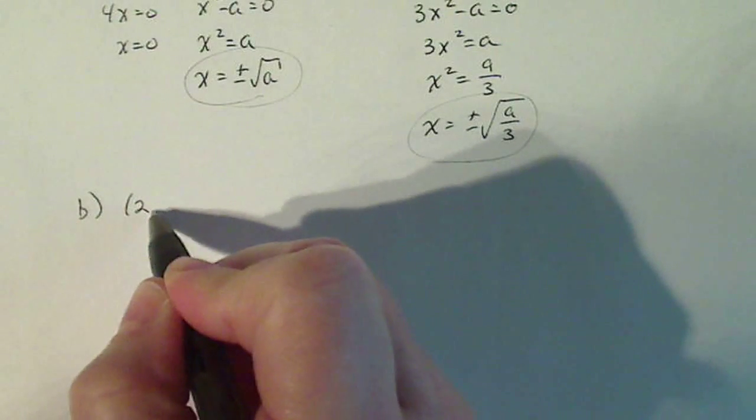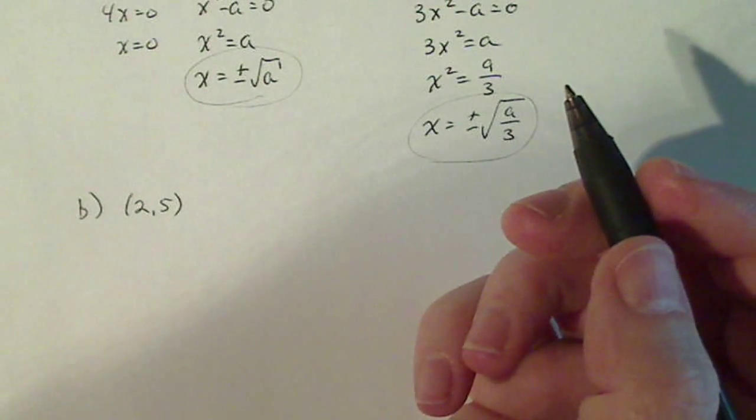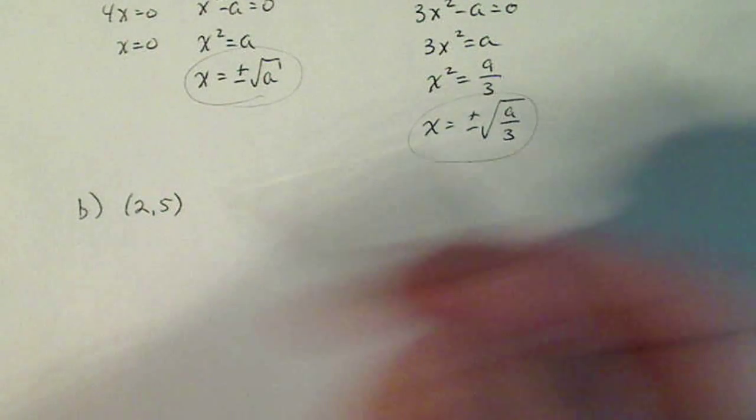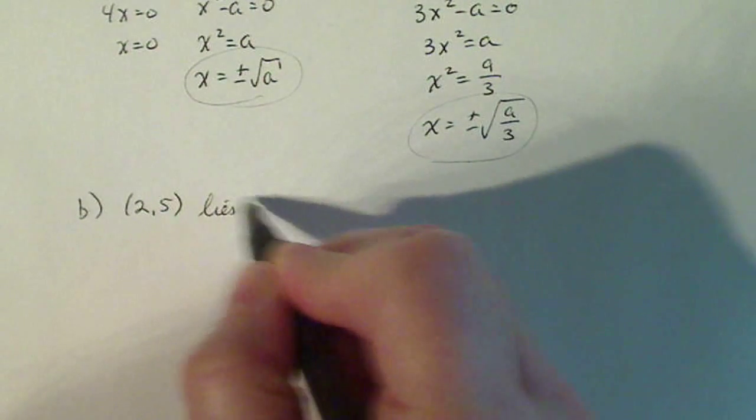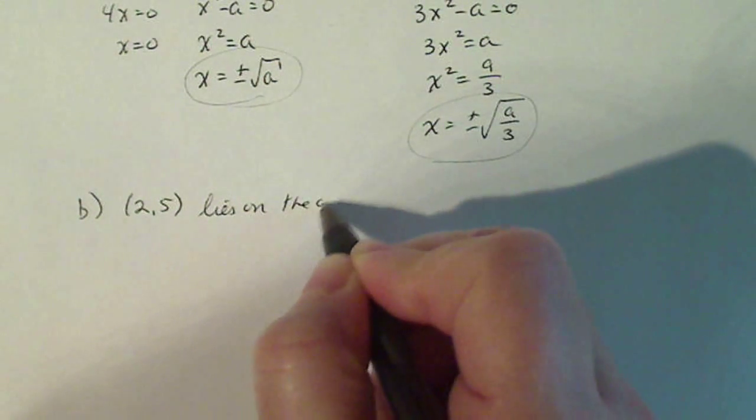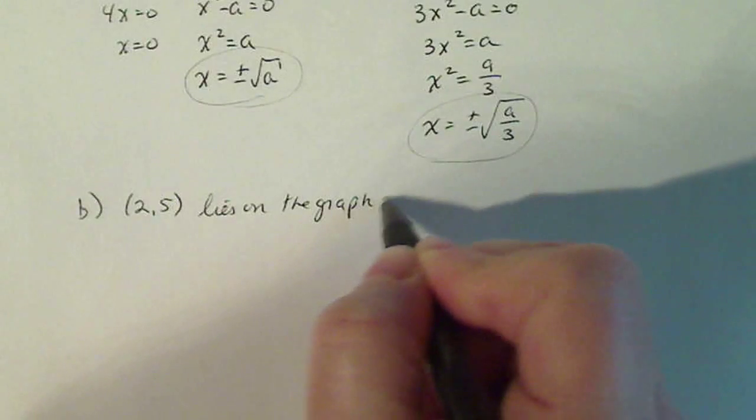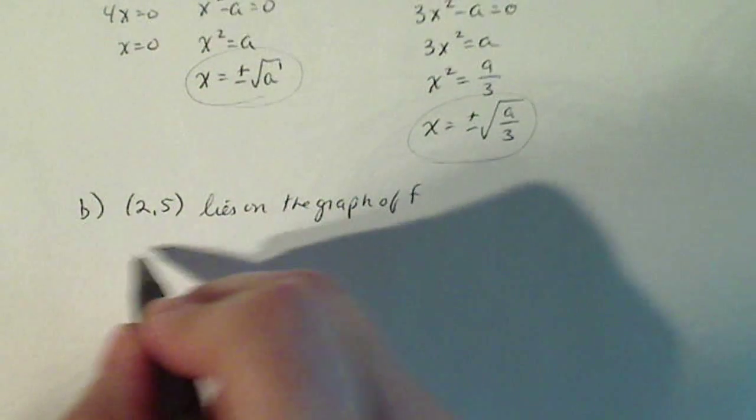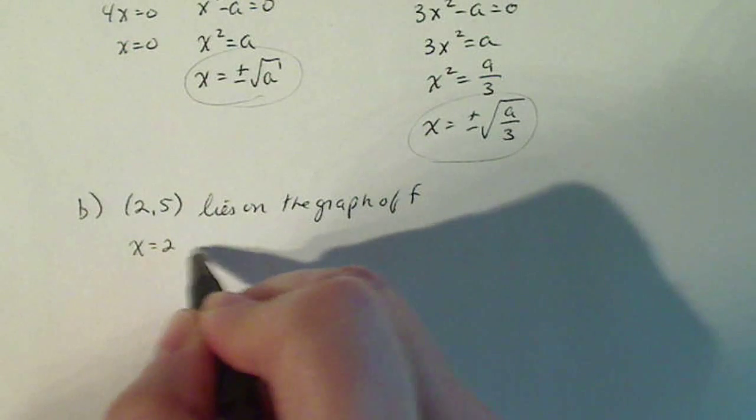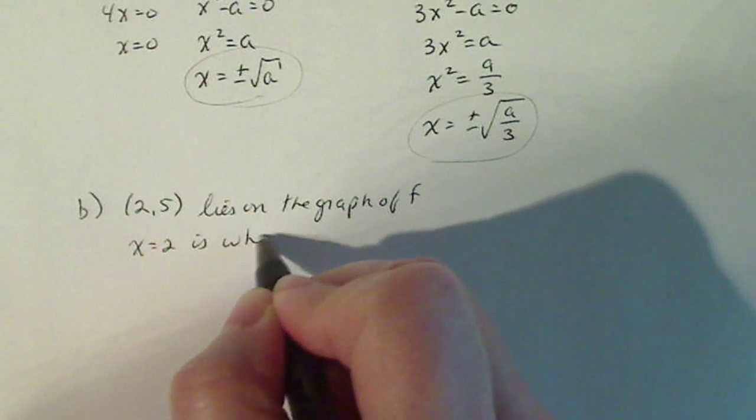So we know that (2, 5), if it's a critical point, we know it also lies on the graph of f. And x equals 2 is where one critical point is.